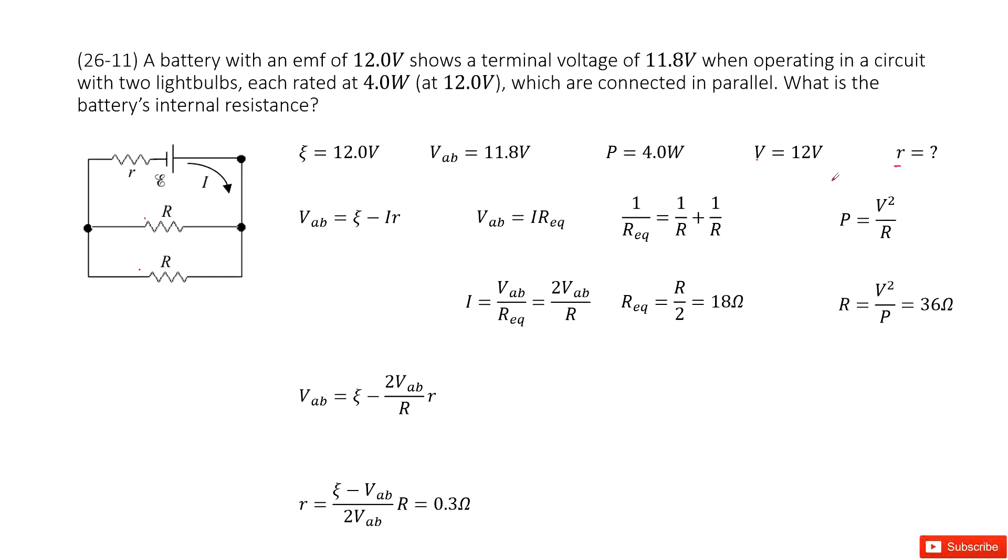In our textbook, the function that connects terminal voltage and emf with internal resistance is V_ab equals epsilon minus current times r. The terminal voltage V_ab is given and epsilon is given. We need to find r, but we don't know the current. If we want to know r, we must first find the current i.